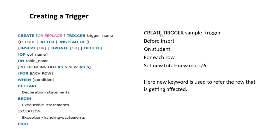Let's take an example. CREATE TRIGGER sample_trigger — the trigger is executed before insert. In the table, this trigger is executed. For each row, one row will be affected. Then: SET new.total = new.mark / 6.